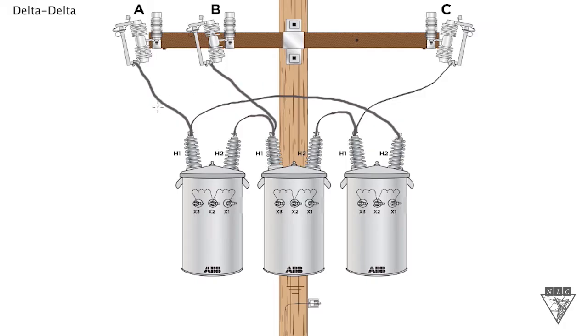With this delta primary connection, it's a phase-to-phase connection. So if you look at this, let's just pick this transformer right here. The H1 is going to A phase, and the H2 is going to B phase. So that's a phase-to-phase connection there.